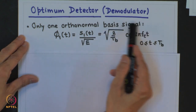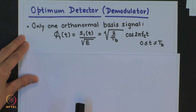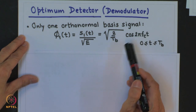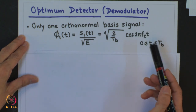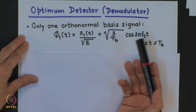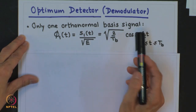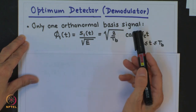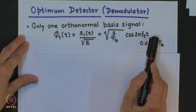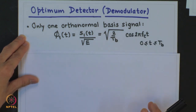This will become of energy 1 over the duration 0 to T_B. If we choose F_C to be some integer multiple of 1/T_B then the energy in this will always turn out to be 1. If it is not an integer multiple, approximately it will be equal to 1, because when we integrate this over duration 0 to T_B for large value of F_C, this turns out to be equal to 1.